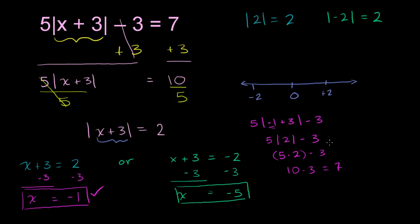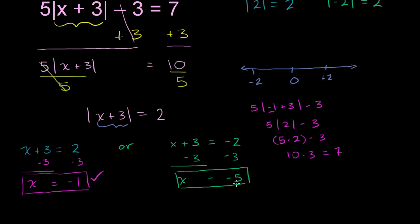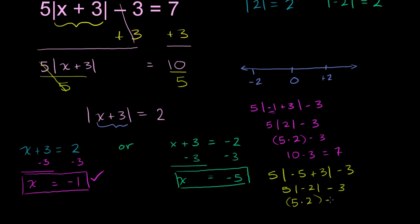Now let's try x equals negative 5. We get 5 times the absolute value of negative 5 plus 3, minus 3. Negative 5 plus 3 is negative 2, so this is 5 times the absolute value of negative 2, minus 3. The absolute value of negative 2 is positive 2, so this gives 5 times 2 minus 3, which is 10 minus 3, equal to 7. Notice that in this case the expression inside the absolute value sign became negative 2, as expected.